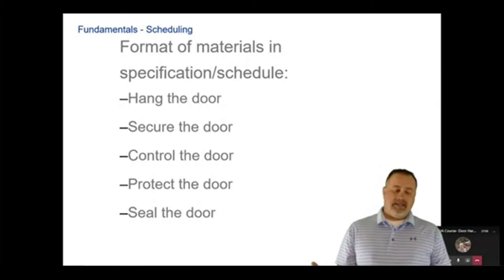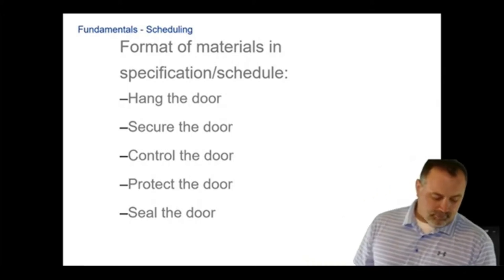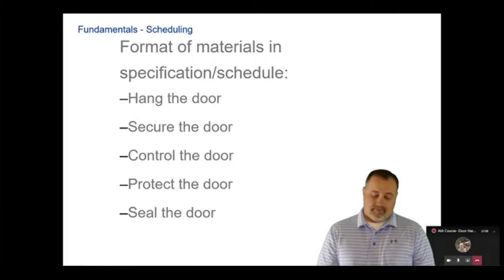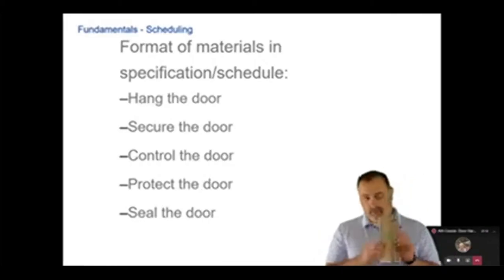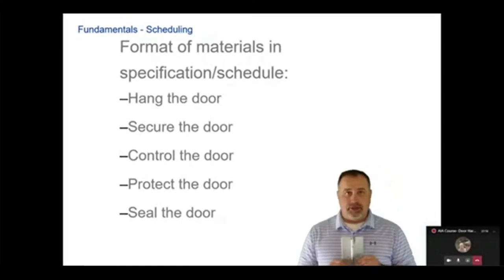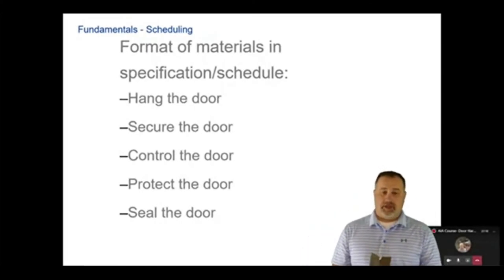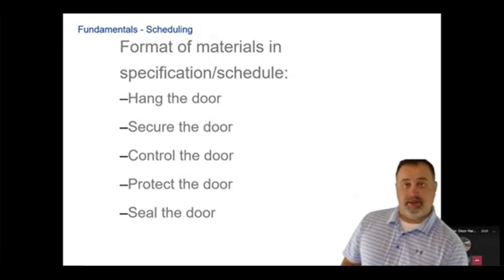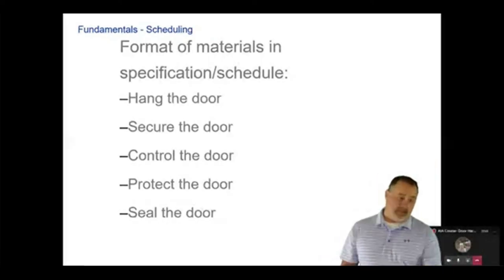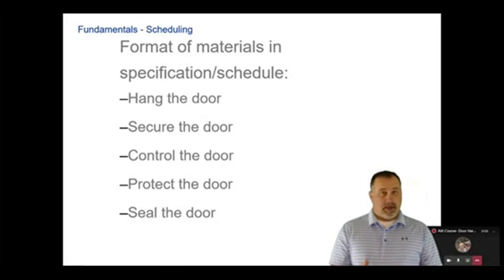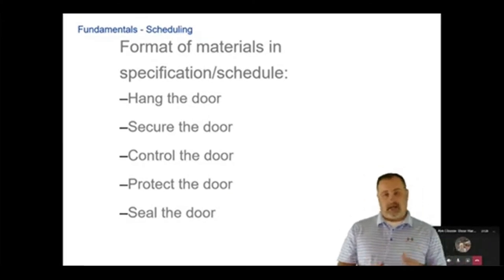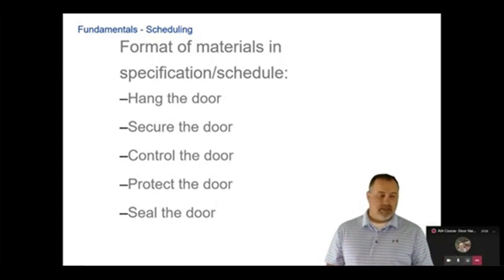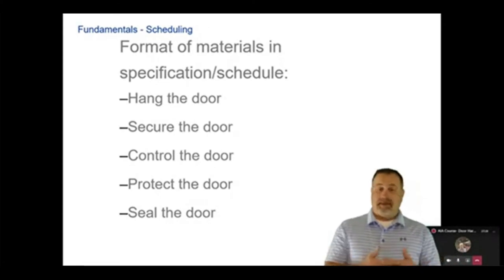Hanging the door is very simple. Whenever you go to install a door in an opening, you need a hinge to do so. That hinge is going to allow you to pivot that door into that opening. It doesn't have to be a continuous hinge — it could be butt hinges, continuous hinges, or pivots. But some type of hanging device will need to be used in order to allow that door to swing in the opening.